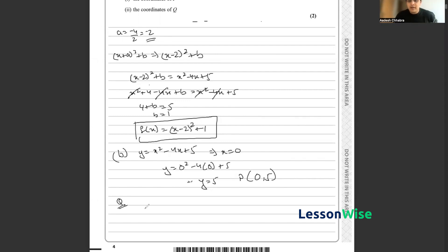If you guys remember, if we have a function in the form (x - k)² + h, the turning point is at the coordinates (k, h).